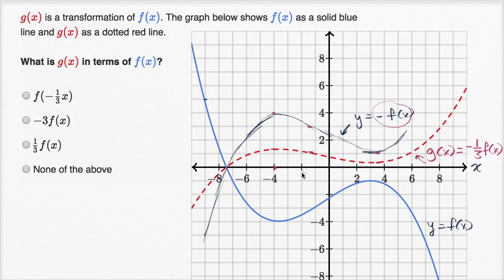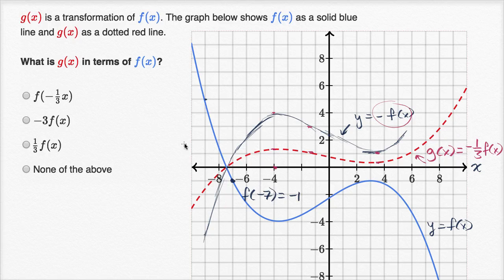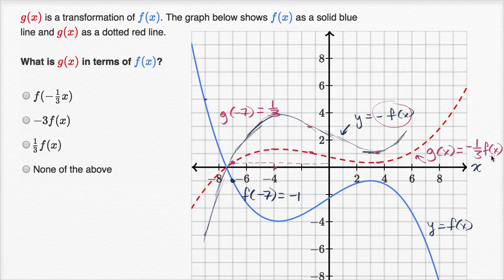Let's see some values where it looks like we're hitting integer values. Right at this point, it looks like f of negative seven is equal to negative one. And it looks like g of negative seven is equal to positive one-third, if I'm just eyeballing it. That seems consistent, because if f of negative seven is negative one, you take negative one-third times that and you get positive one-third.